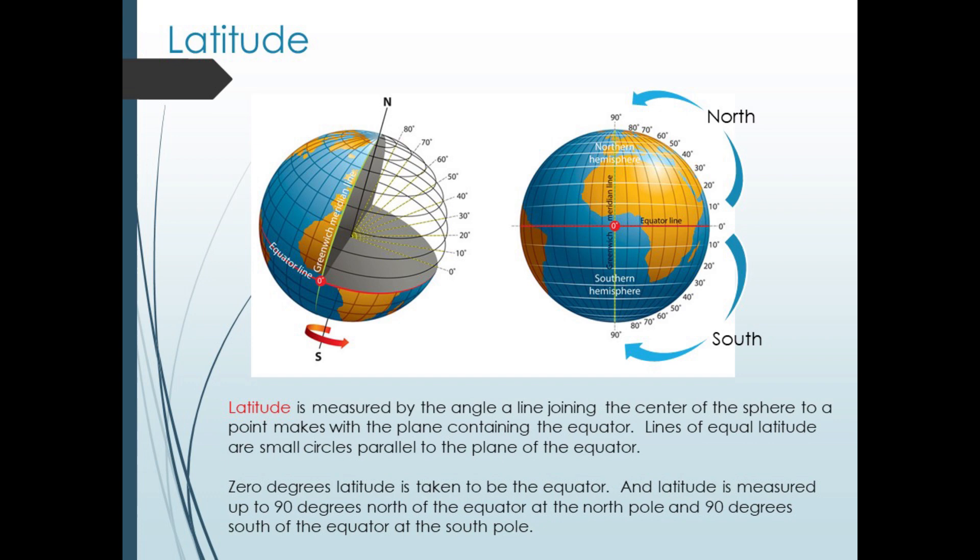Longitude requires that we specify east or west as part of its measure. Latitude is measured by the angle between the plane containing the equator and a line segment joining the center of the Earth to your position. Lines of equal latitude are called parallels because they form circles parallel to the equator. Zero is chosen to be along the equator, and we measure 0 to 90 degrees to the north and south of the equator, with 90 degrees being at the poles. Latitude requires we specify north or south as part of its measure.